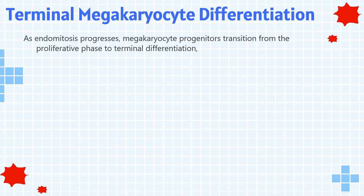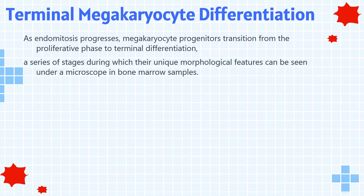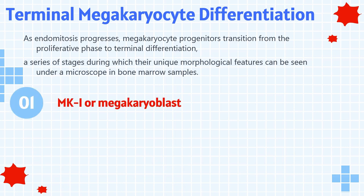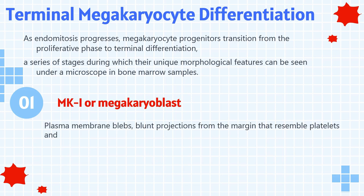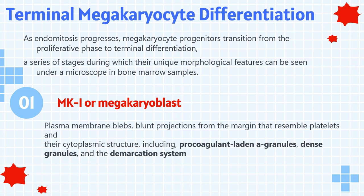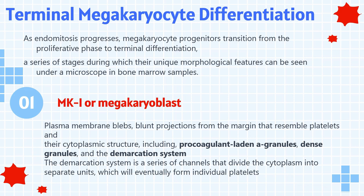As endomitosis progresses, megakaryocyte progenitors transition from the proliferative phase to terminal differentiation — a series of stages during which their unique morphological features can be seen under a microscope in bone marrow samples. The earliest stage, the MK1 or megakaryoblast, has started developing plasma membrane blebs — blunt projections from the margin that resemble platelets — and its cytoplasmic structure, including procoagulant-laden alpha granules, dense granules, and the demarcation system. The demarcation system is a series of channels that divide the cytoplasm into separate units, which will eventually form individual platelets.